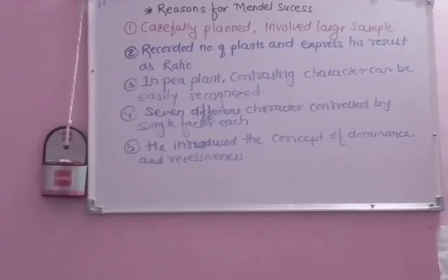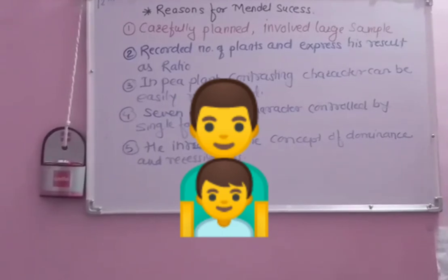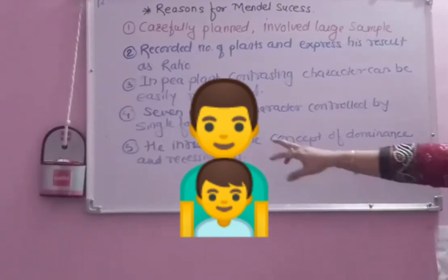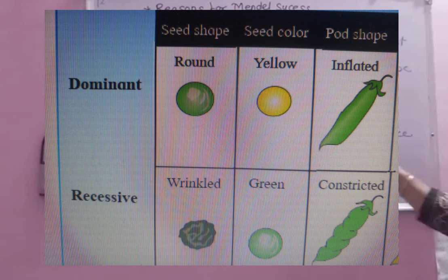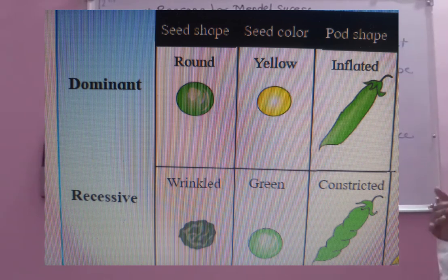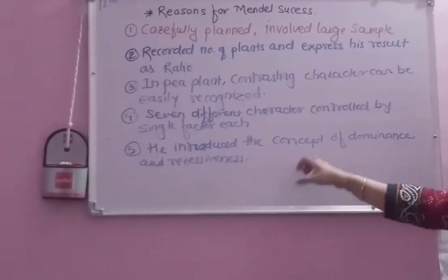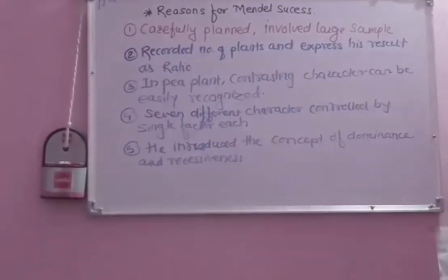The factors are located on separate chromosomes and are transmitted from generation to generation. Lastly, Mendel introduced the concept of dominance and recessiveness — the concept that when crossing, characteristics are not simply mixed or blended, but one is distinctly dominant over the other.